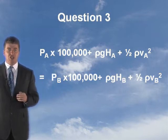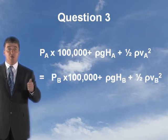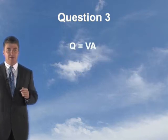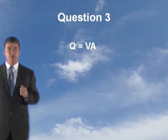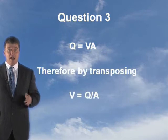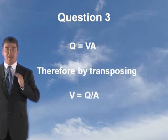Next, we need to determine the velocity energy of the water using the continuity equation. So don't forget we need another continuity equation. Now that is Q equals VA, and therefore, by transposition, V equals Q divided by A.